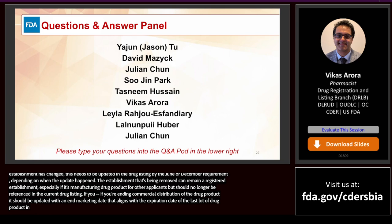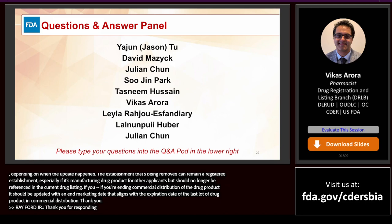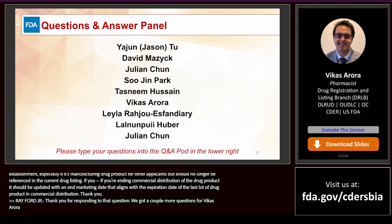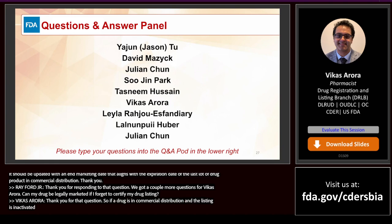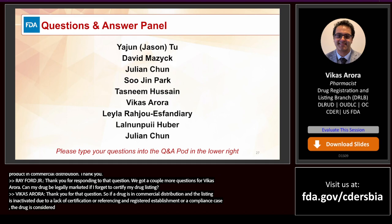If you are ending commercial distribution of the drug product, the drug listing should be updated to add a 'complete' status with an end marketing date that aligns with the expiration date of the last lot of drug product in commercial distribution. Question: Can my drug be legally marketed if I forget to certify my drug listing? If a drug is in commercial distribution and the listing is inactivated due to lack of certification, referencing an unregistered establishment, or a compliance case, the drug is considered misbranded while it's not properly listed with the FDA.